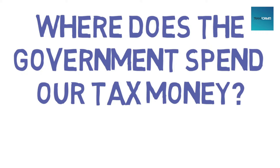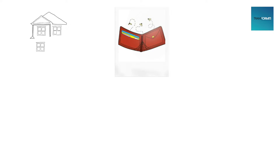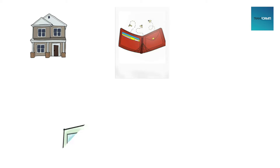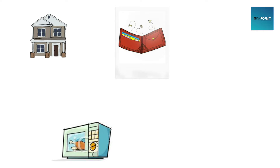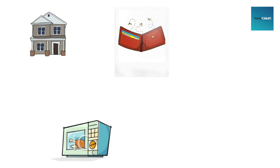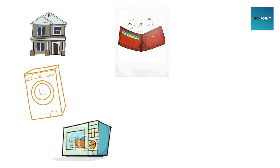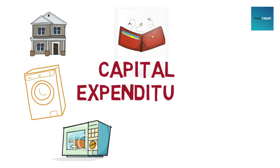Ever wondered where the government spends our tax money? Think of government expenditure like your budget to run your home. You buy assets for your home such as a microwave or a washing machine. This is capital expenditure.